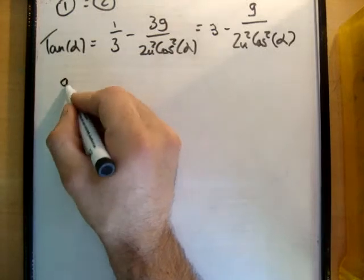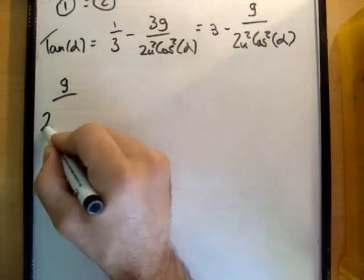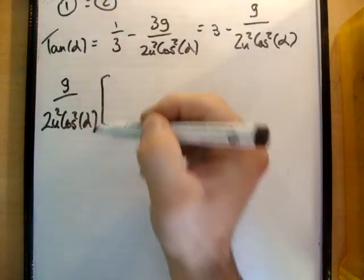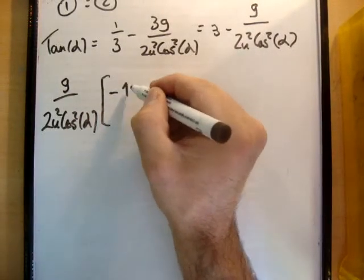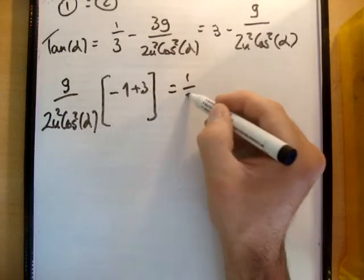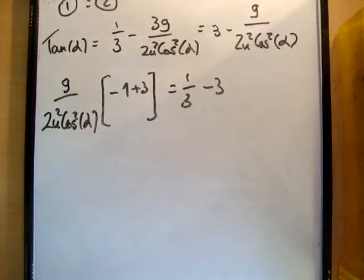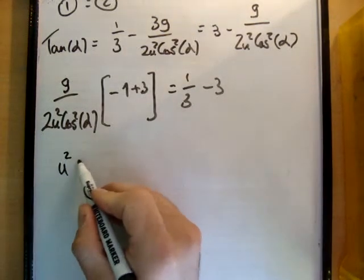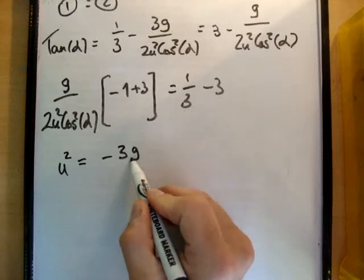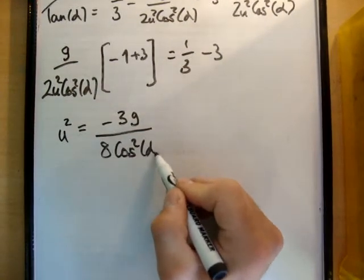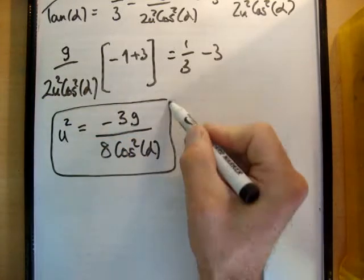Now we have two expressions for tan alpha, so let's set them equal: 1/3 minus 3g over (2u squared cos squared alpha) equals 3 minus g over (2u squared cos squared alpha). Rearranging — pulling out the common factor g over (2u squared cos squared alpha) — you get u squared equals negative 3g over 8 times cos squared alpha. I'll call that expression 3.